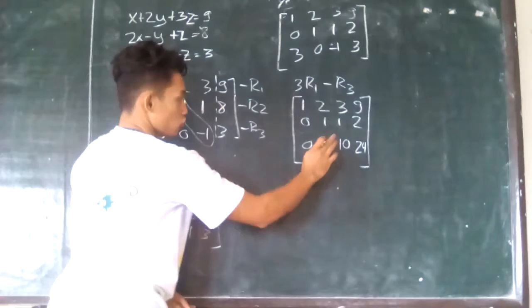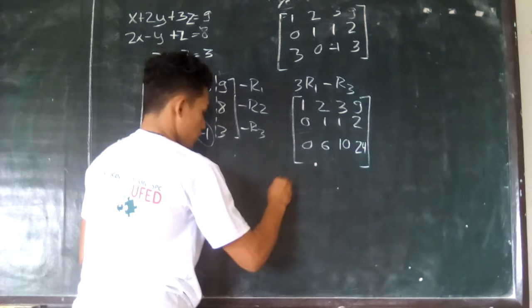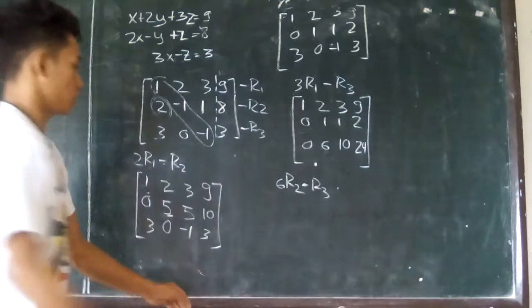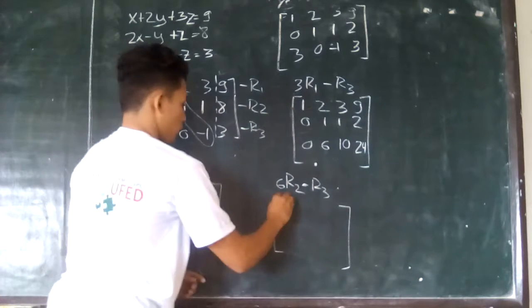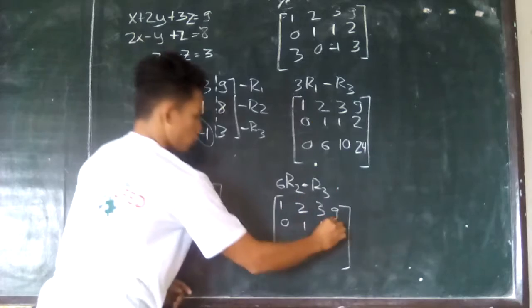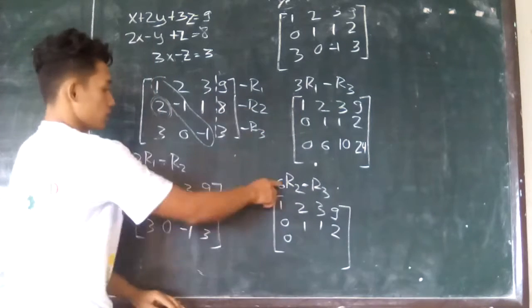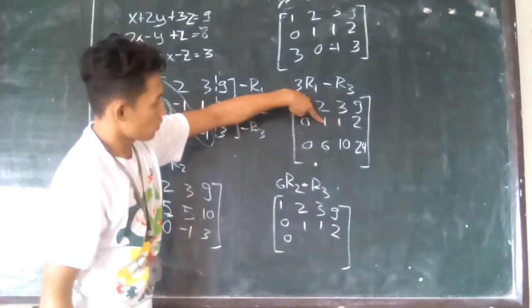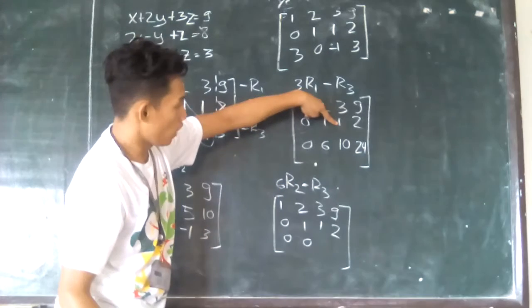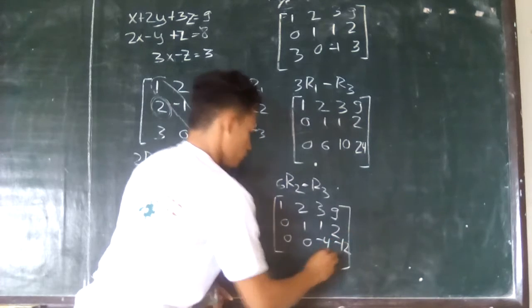Now we have 6 in row 3's second column. To make it 0, we use 6 times row 2 minus row 3. Copy row 1: 1, 2, 3, and 9. Copy row 2: 0, 1, 1, and 2. Then 6 times 0 minus 0 is 0. 6 times 0 minus 0 is 0. 6 times 1 is 6 minus 6 is 0. Then 6 times 1 minus 10 is negative 4. 6 times 2 is 12 minus 24 is negative 12.